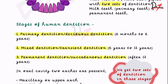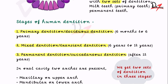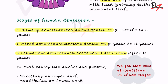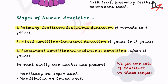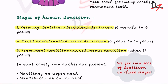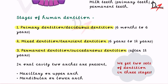So to summarize: we get two sets of dentition — milk and permanent — in three stages. Now in the oral cavity we have two arches, basically two jaws. The upper jaw is called the maxilla and the lower jaw is known as the mandible, giving us the maxillary and the mandibular arches.